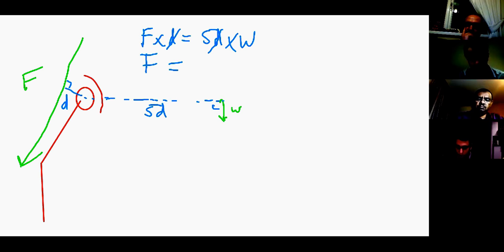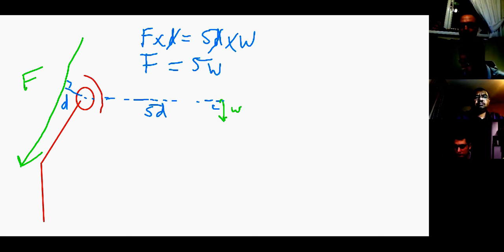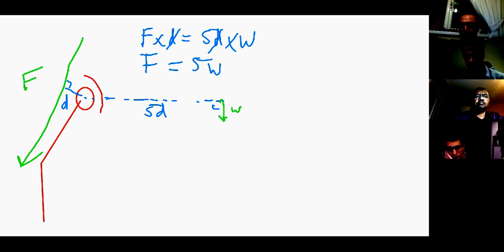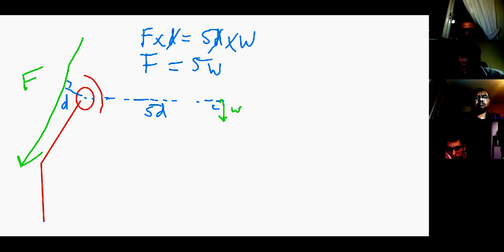So then: F multiplied by d equals 5d multiplied by W. If you cancel out the d's, the force of the abductors equals five times body weight. If the examiner insists on a number and the person's weight is 70 kg, you say five times 70. If they want a precise number, just tell them to give you a calculator — you don't need complex trigonometry here.